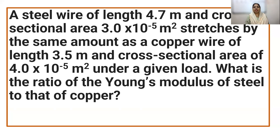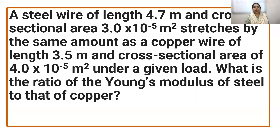A steel wire of length 4.7 meter and cross-sectional area 3 into 10 raised to minus 5 meter square stretches by the same amount as a copper wire of length 3.5 meter and cross-sectional area of 4.0 into 10 raised to minus 5 meter square under a given load. What is the ratio of Young's modulus of steel to that of copper?